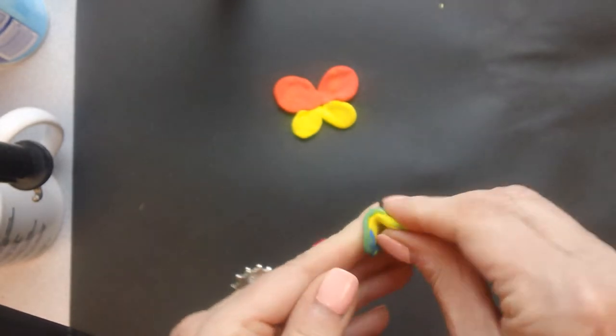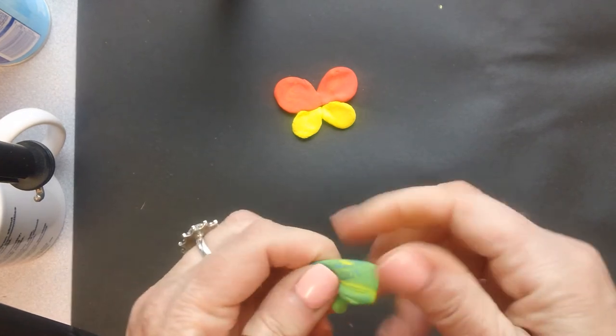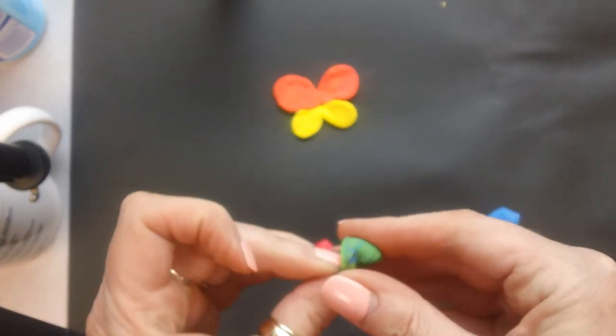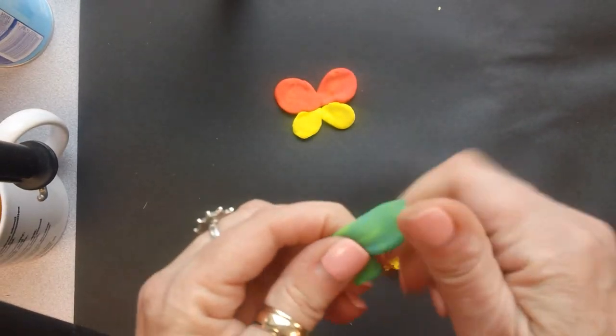Now, sometimes when we do this project, kids want to make antennas because they know butterflies have antennas. But antennas don't really work out so well with Model Magic clay. So I would just skip that part.